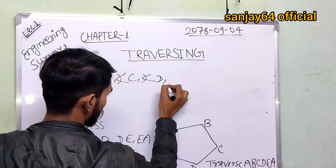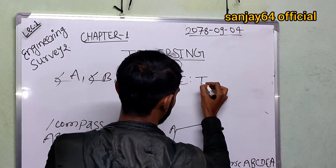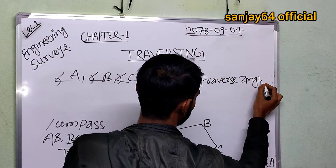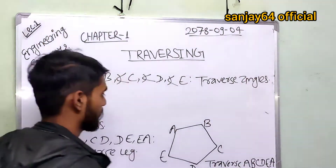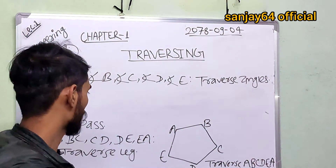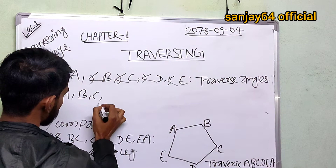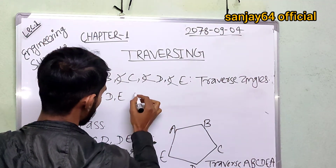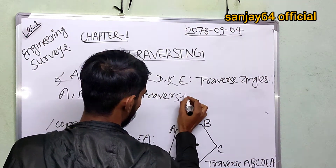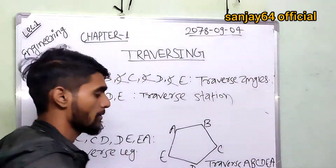This is angle D, this is angle E. What is the Traverse Angle? The Traverse Angles are at stations A, B, C, D, and E. These are the Traverse Angles and these are the Traverse Stations.